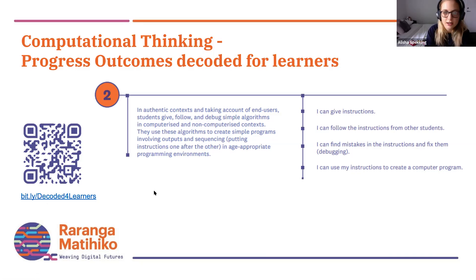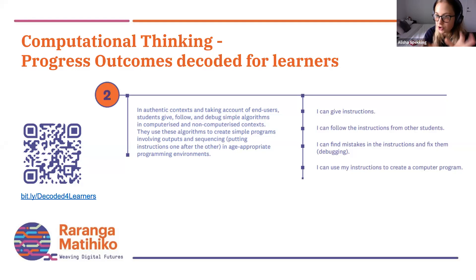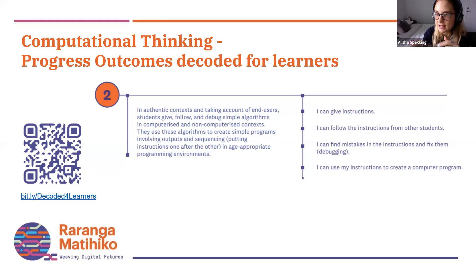I've got progress outcome two and three up because that's where Makey Makey starts to fit in. Progress outcome one is about giving instructions, following instructions, and debugging, and should predominantly be done in a non-computerized environment. You can practise a simulation of input-process-output unplugged — for example, student one whispers an instruction to student two, who whispers to student three, who performs the task. Student one is the input, student two is the processing, student three is the output. It's just a way to aid understanding as they get to more complex concepts.